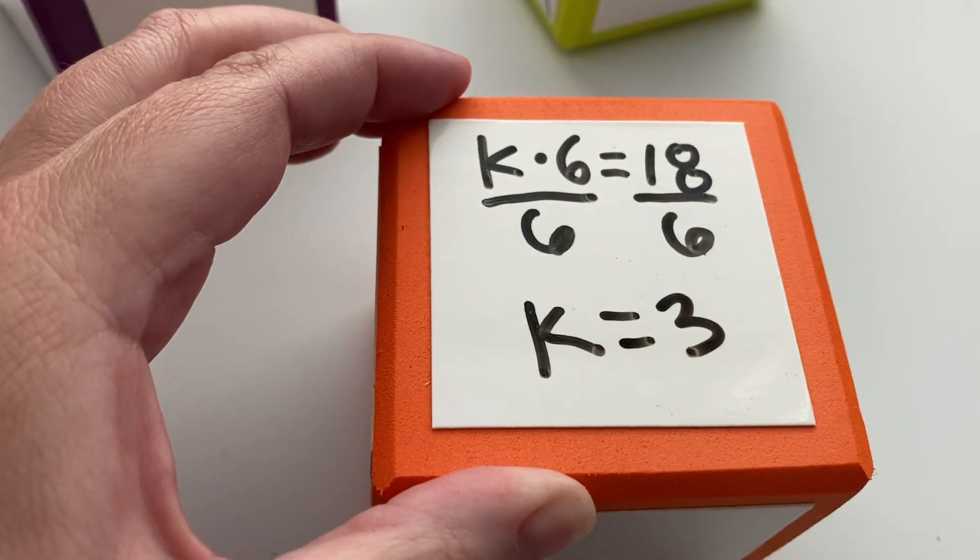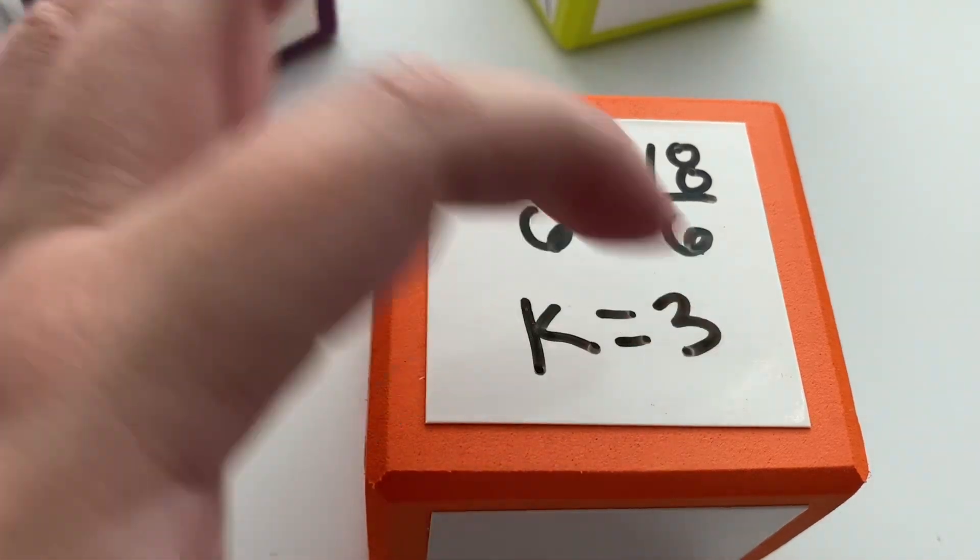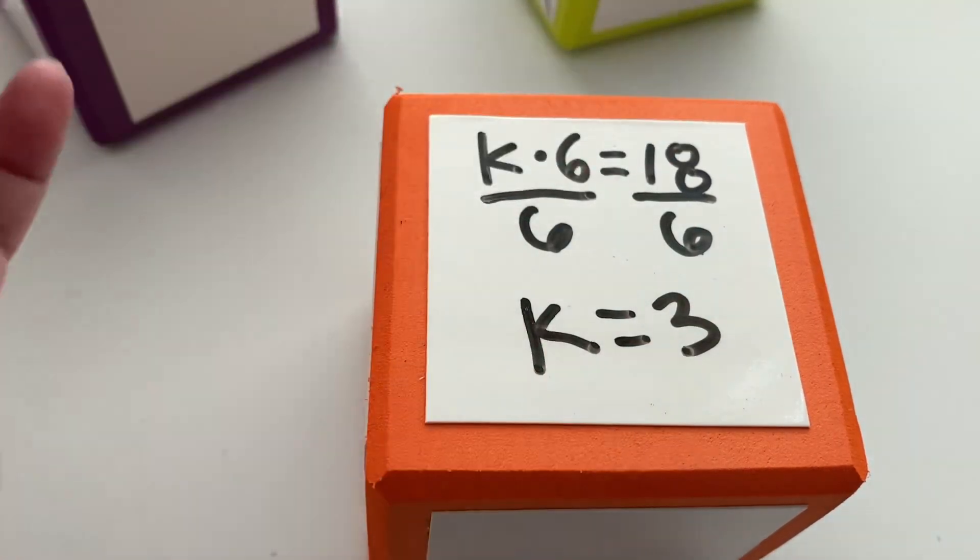Six divided by six equals one, so we're left with k. We'll divide this side by six to keep it balanced, and we get k equals three. You can check: three times six equals eighteen, so we're on the right track.